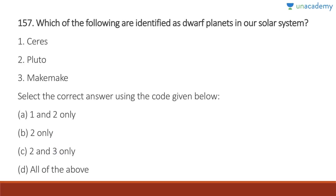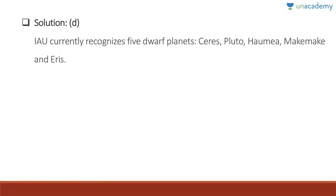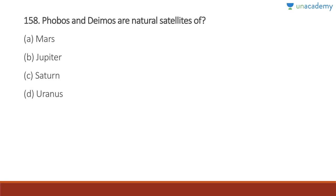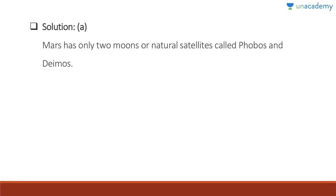Question 157: Which are the officially recognized dwarf planets? Ceres, Pluto, Makemake, Haumea, and Eris. Answer is D, all of the above. According to the IAU, the dwarf planets are Ceres, Pluto, Haumea, Makemake, and Eris. Question 158: Phobos and Deimos are the two natural satellites of Mars.